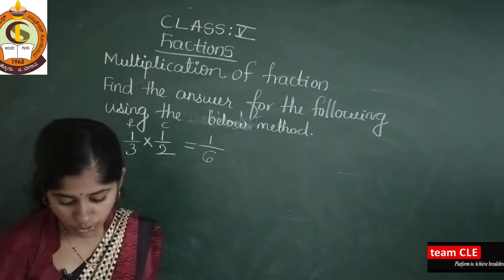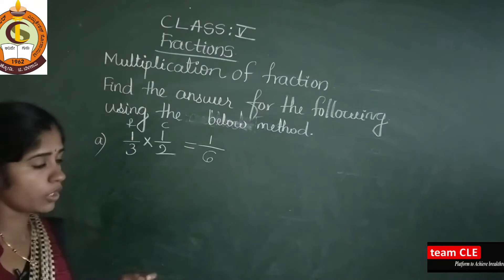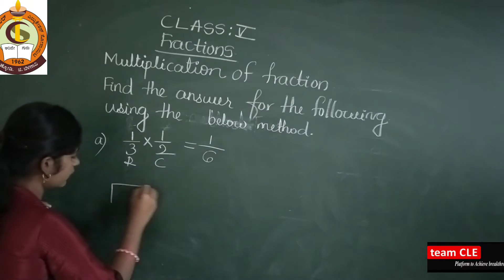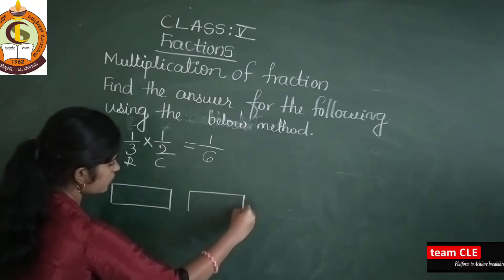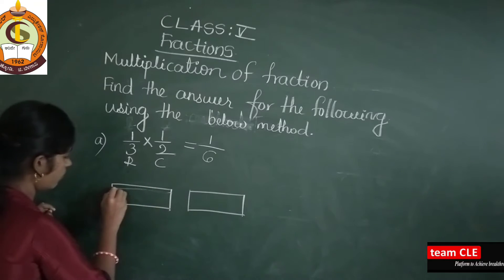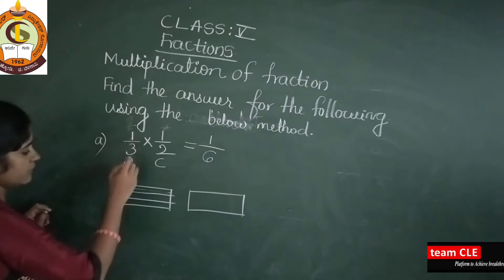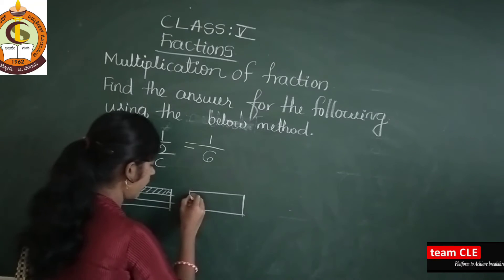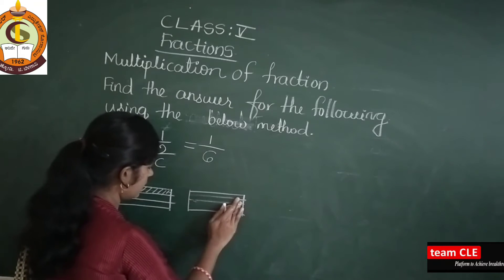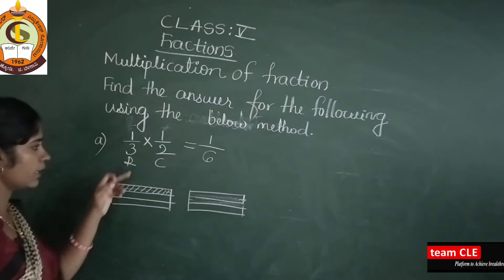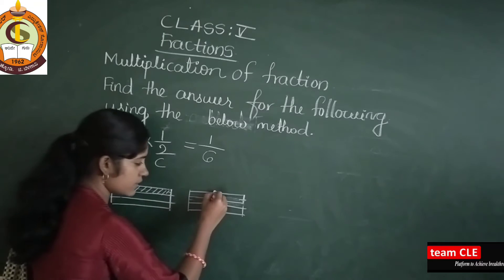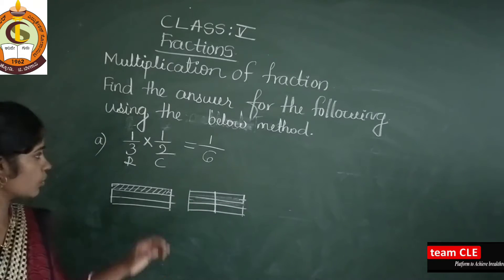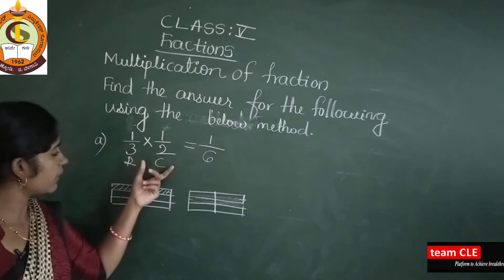They told us to use two different colors for rows and columns. So first take in your mind: this is a row and this is a column. I will draw here 3 columns. The same figure you have to draw here also, and here I will draw 3 rows. So 1/3 is considered as rows, and 1/2 as columns.